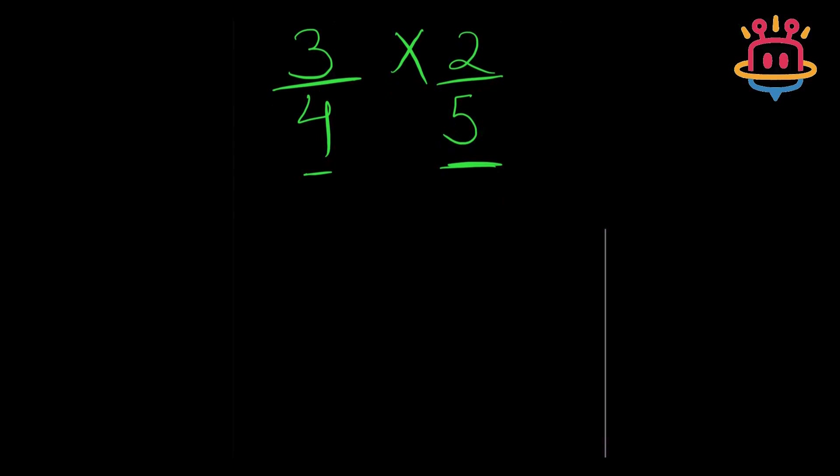Multiply the tops means multiply the numerators. So I multiply 3 and 2 to get my answer as 6.